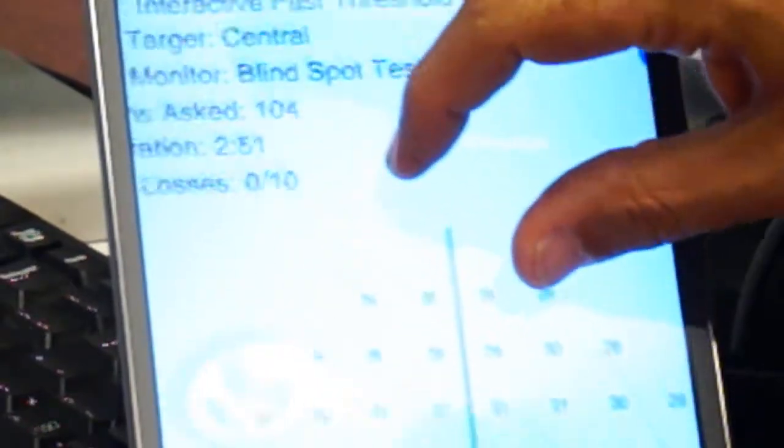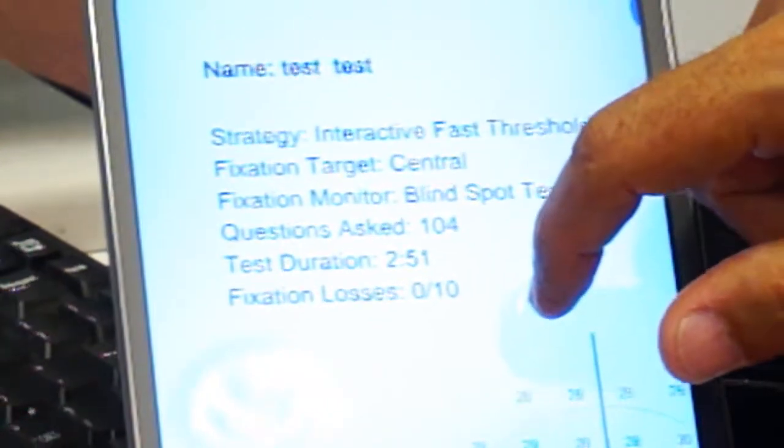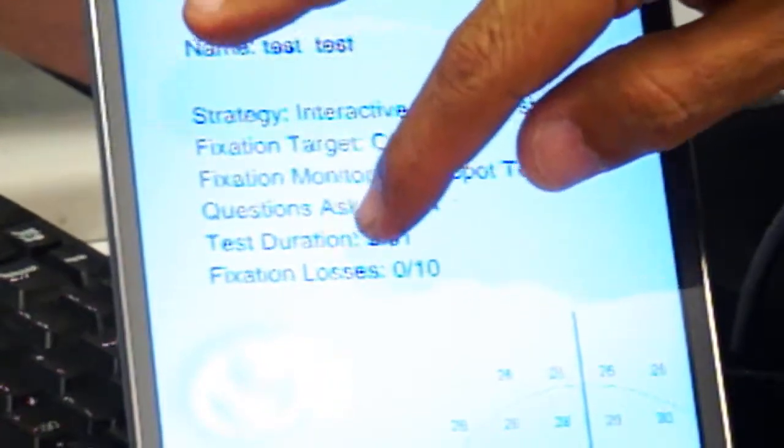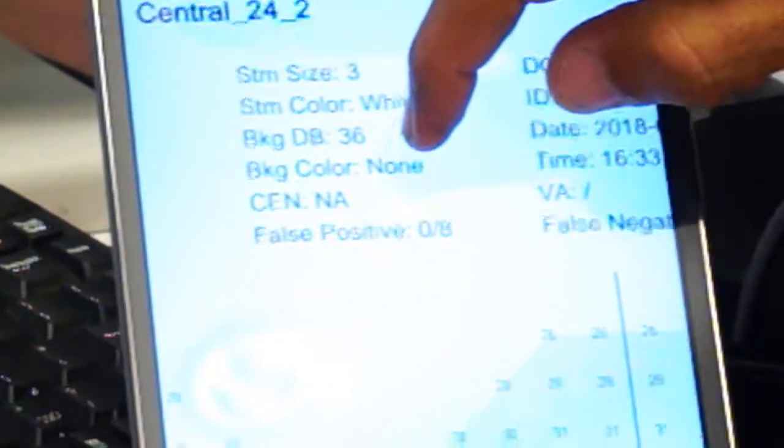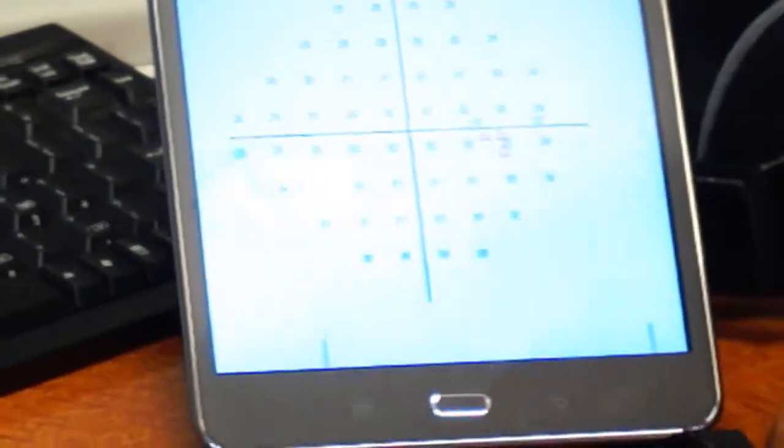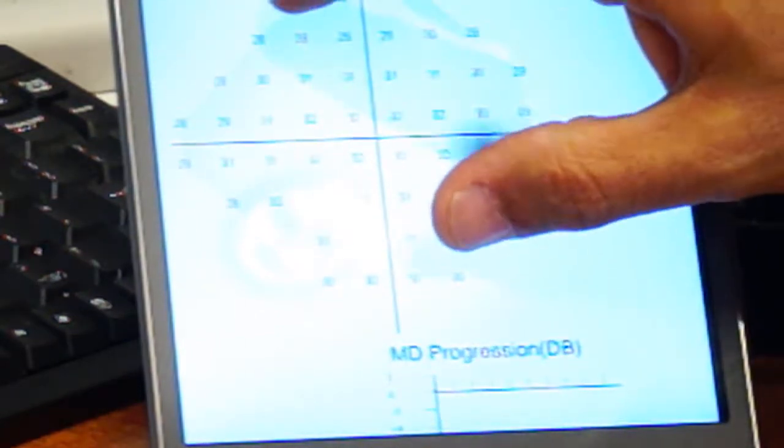So here, let's look at this report. It took me two minutes and 51 seconds to do the threshold test. Next, we have the usual monitoring parameters such as fixation loss, which was 0 over 10, false positive and false negative. Fixation is monitored by the blind spot testing. The triangles indicate the location of the blind spot that was tested.